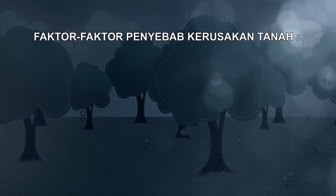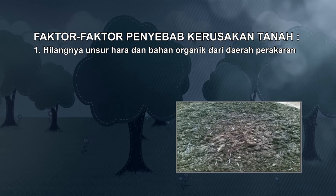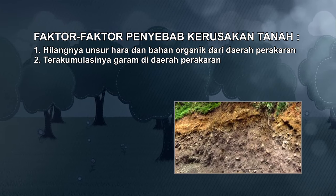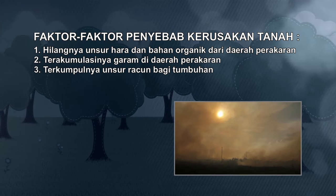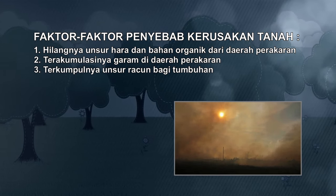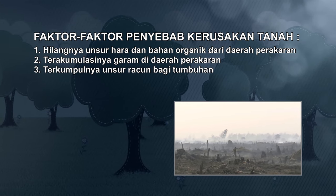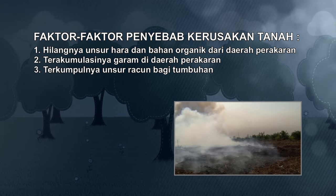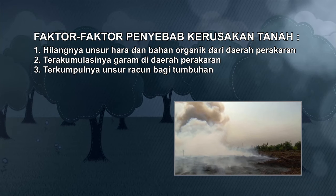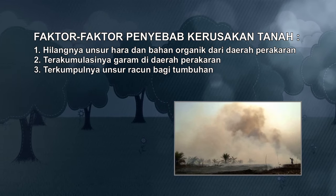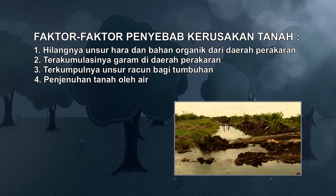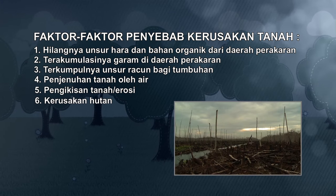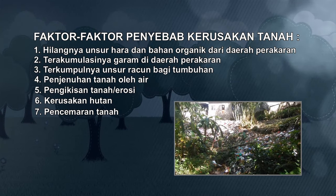Perusakan tanah dapat terjadi karena: 1) hilangnya unsur hara dan bahan organik dari daerah perakaran; 2) terakumulasinya garam di daerah perakaran; 3) terkumpulnya unsur atau senyawa yang merupakan racun bagi tumbuhan, misalnya unsur Cl diperlukan oleh tanaman tetapi kadarnya hanya sedikit — jika kadar Cl berlebihan dapat menyebabkan racun bagi tumbuhan; 4) penjenuhan tanah oleh air; 5) pengikisan tanah atau erosi; 6) kerusakan hutan; 7) pencemaran tanah.